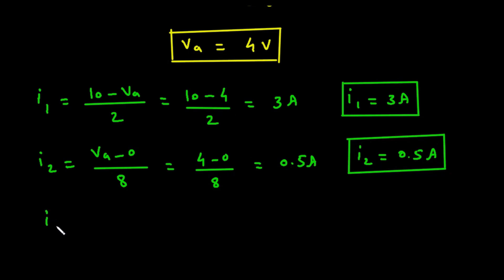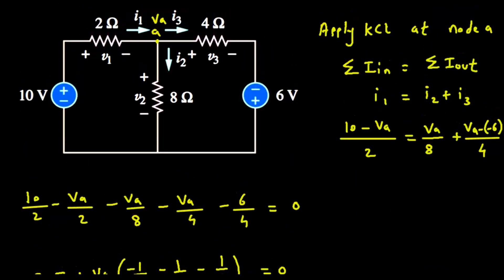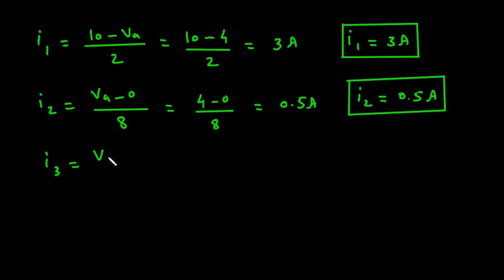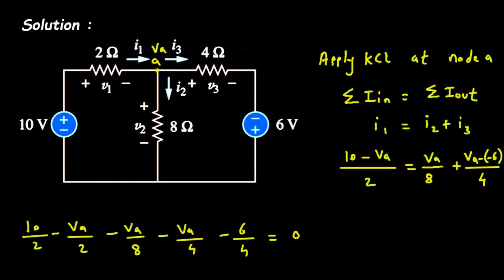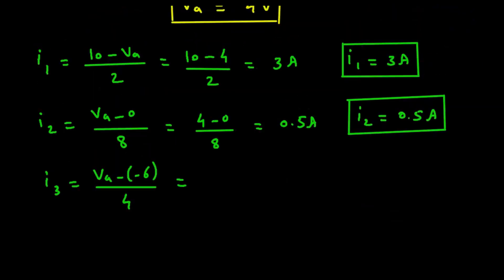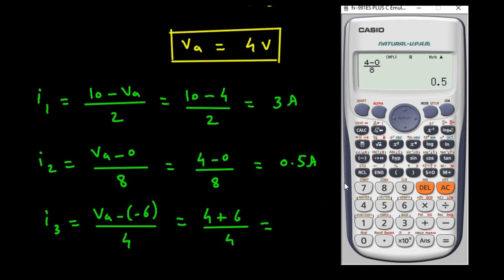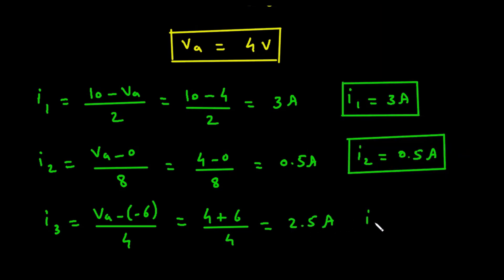Next, I3 = (VA − (−6)) / 4 = (4 + 6) / 4 = 10 / 4 = 2.5 amperes. Therefore I3 equals 2.5 amperes.